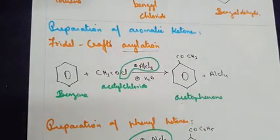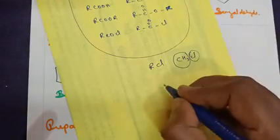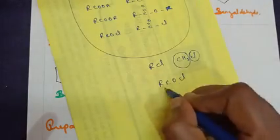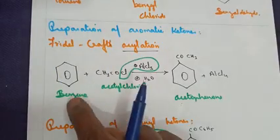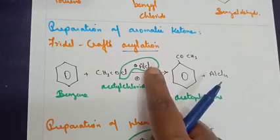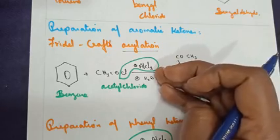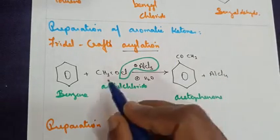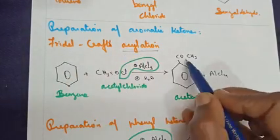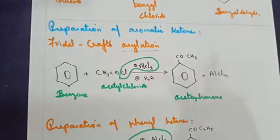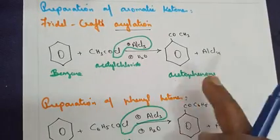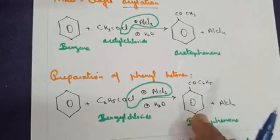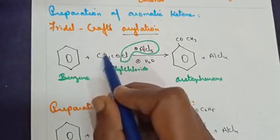Moving on to the preparation of aromatic ketones — the first method is Friedel-Crafts acylation. In acylation, we use an acyl halide such as acetyl chloride (CH3COCl). When benzene is treated with acetyl chloride in the presence of AlCl3 (a Lewis acid), AlCl3 combines with the Cl and leaves as AlCl4⁻. We are left with the CH3CO⁺ electrophile, which joins the benzene ring to give acetophenone.